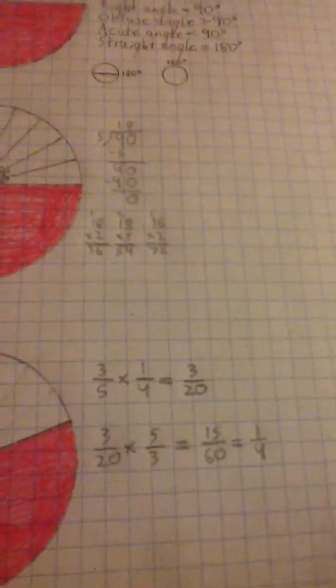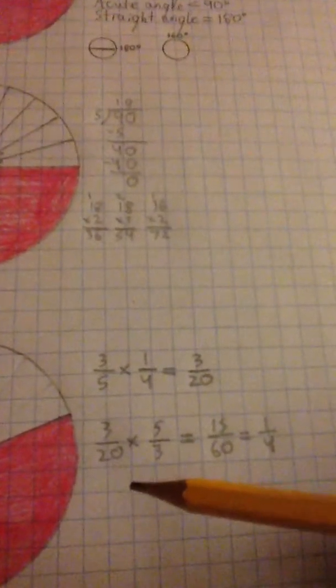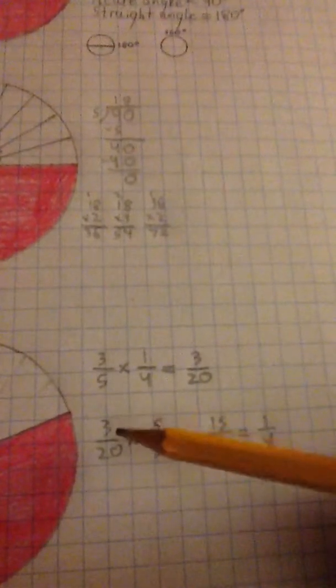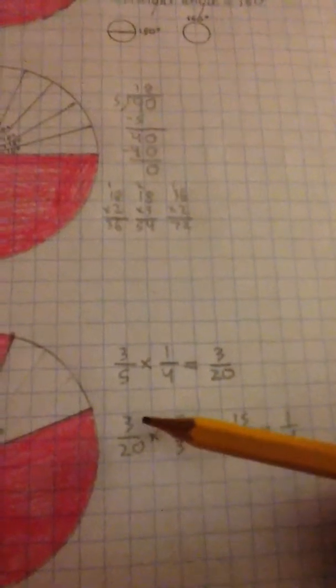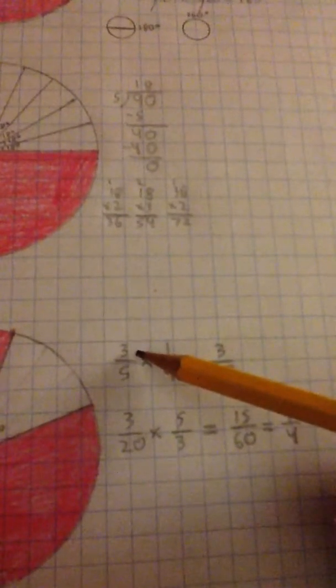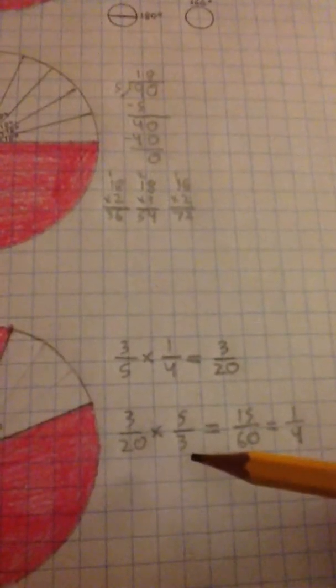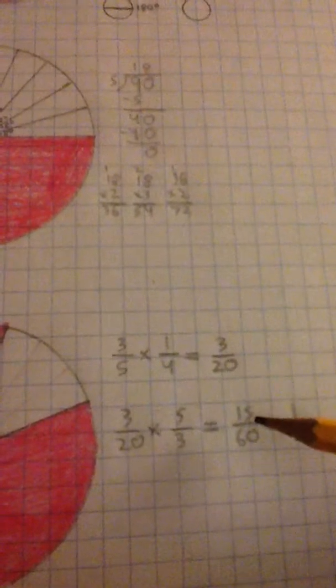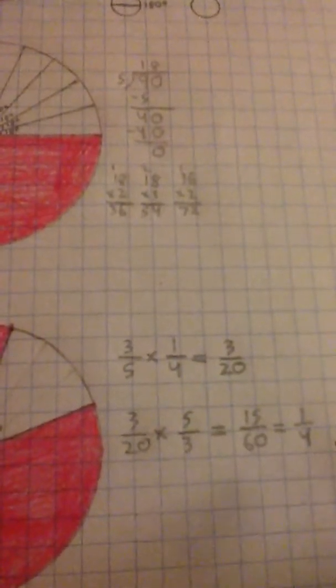And the interesting thing about dividing fractions is you take the reverse and multiply it. For instance, as you can see here, if you want to divide three-twentieths by three-fifths, what you do is multiply it by five-thirds. So, then you do that, and then it goes down to, it's equal to one-fourth. Sorry, I don't remember all of the terms.